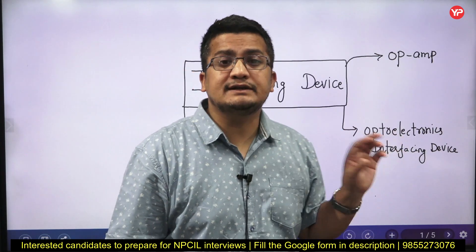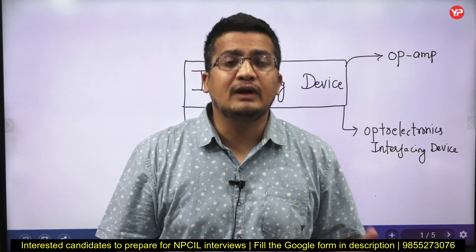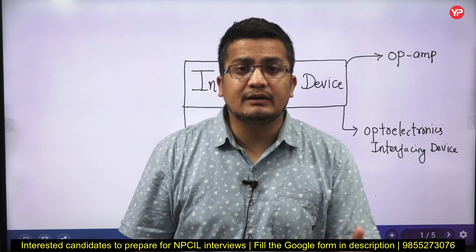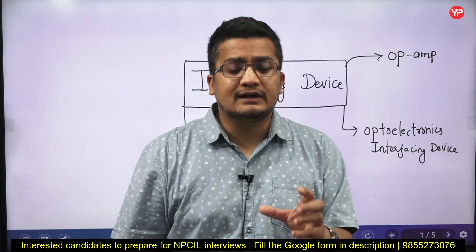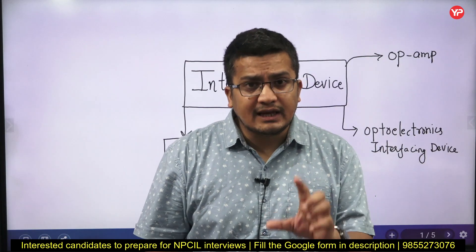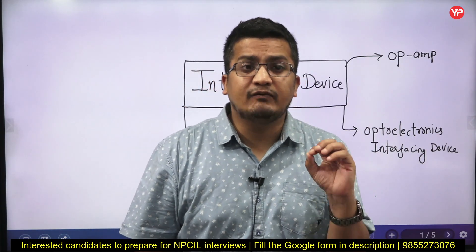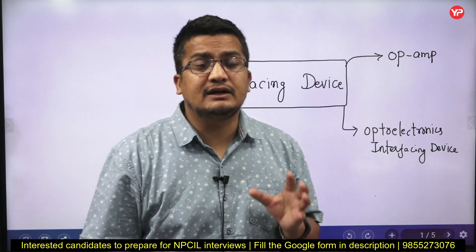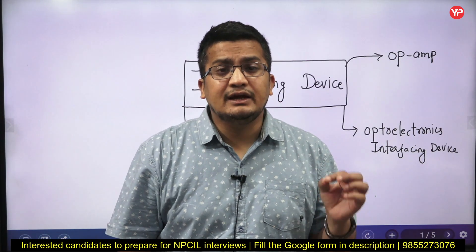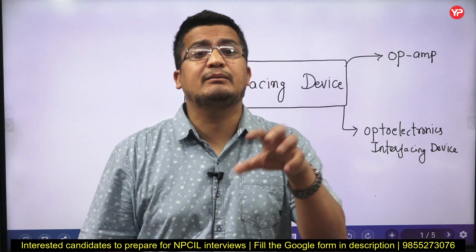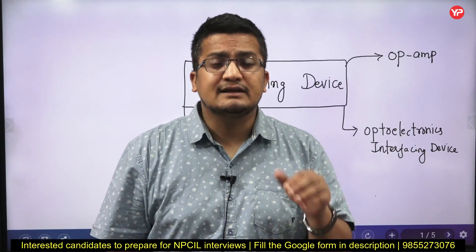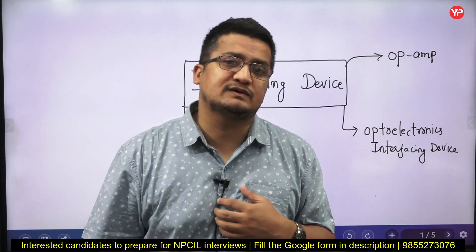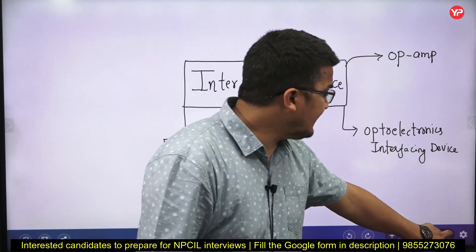There are also optoelectronics interfacing devices which convert light into electrical signals and electrical signals into light — that may be a photo diode, LED, photo transistor, and similar devices. You should be well-versed in their working principles and characteristics. Apart from that, A-to-D and D-to-A converters are studied in digital electronics. You must know the various parameters such as accuracy, speed, error, and settling time associated with each conversion process.